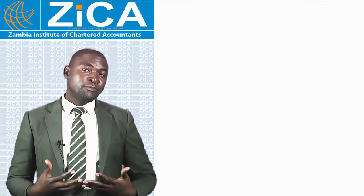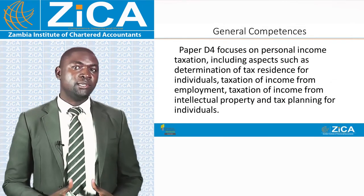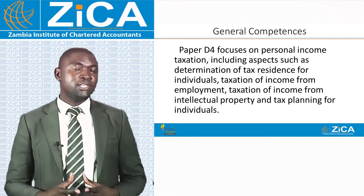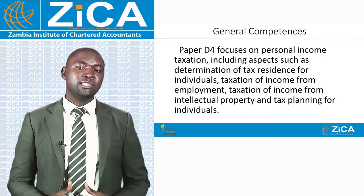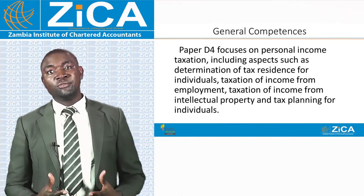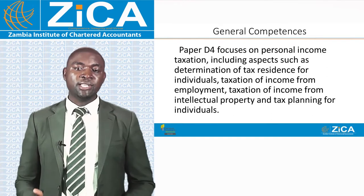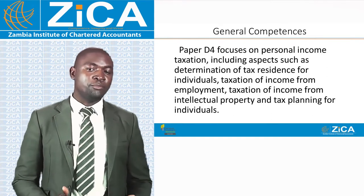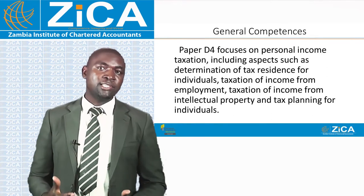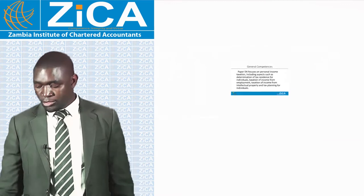Paper D4 focuses on personal income taxation, including aspects of determination of tax residence for individuals, taxation of income from intellectual property, taxation of income from employment, and tax and financial planning for individuals.